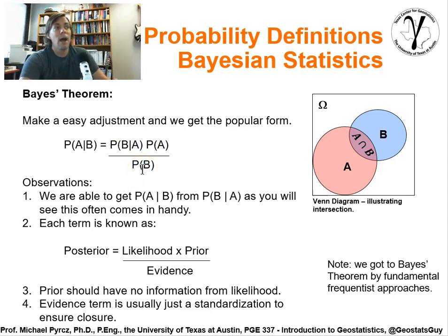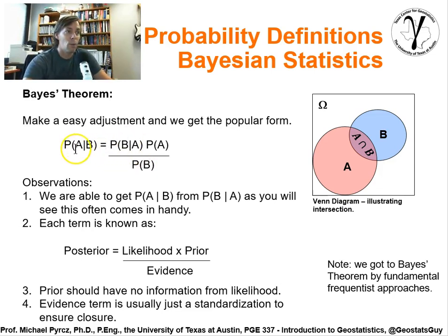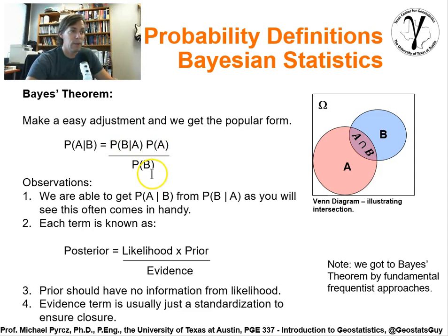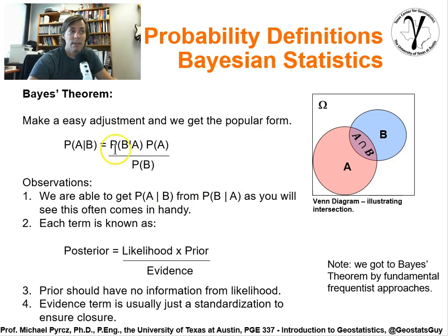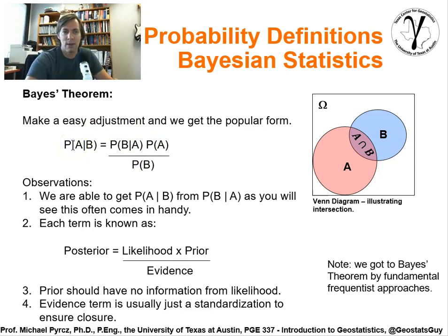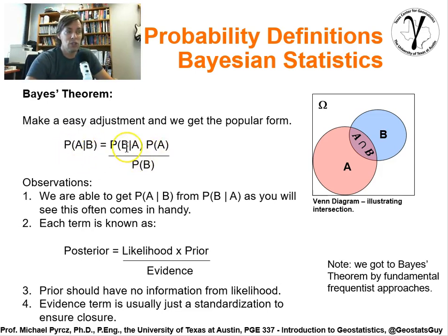What's very powerful about this idea is the fact that we can solve for the probability of A given B by taking the probability of B given A with these other factors employed. This often comes in handy, because often there's a conditional probability that we can calculate directly from the data, and there's one that's harder to calculate or we may not be able to calculate directly, but it's more important to us. So we can use this relationship to flip the conditional probability.